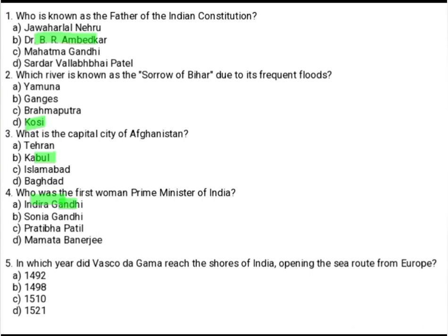In which year did Vasco da Gama reach the shores of India, opening the sea route from Europe? Option A: 1492. Option B: 1498. Option C: 1510. Option D: 1521. The correct option is Option B, 1498.